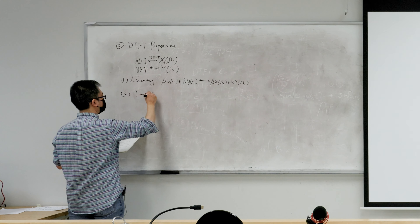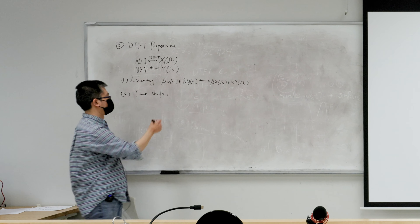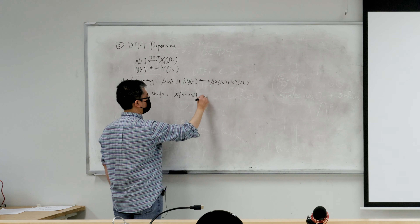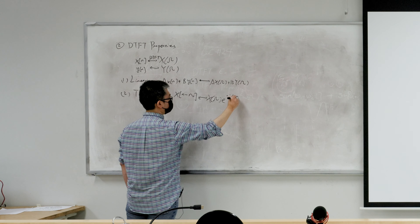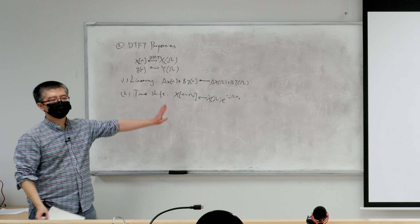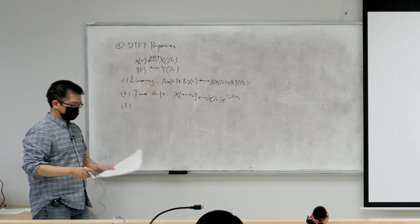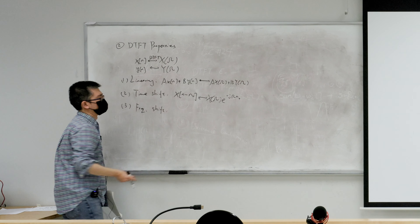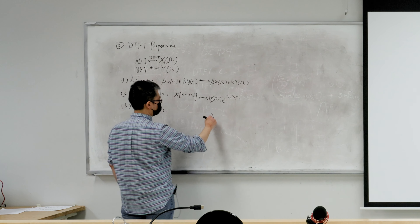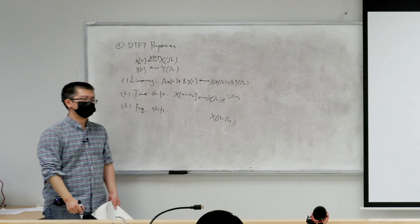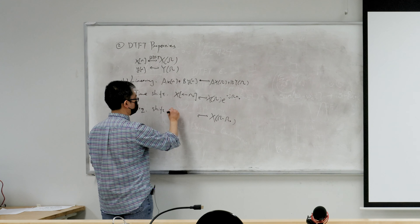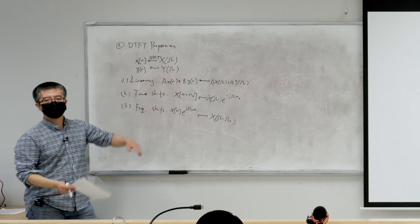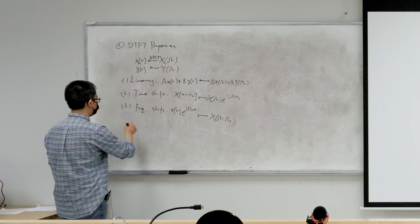Second: time shift. If we shift in the time domain by n_0, in the frequency domain it will be a phase shift — multiply by e^(minus j omega n_0). Be careful: there's a minus sign. This is identical to the CTFT counterpart. Third: frequency shift. If we have a frequency shift by capital Omega_0 in frequency domain, in the time domain it becomes x(n) multiplied by e^(j omega_0 n) — no negative sign here.